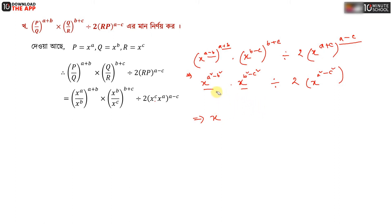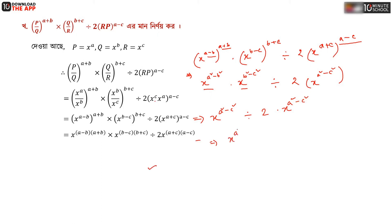Ultimately we have a squared minus c squared, and the result is 2 into x to the power a squared minus c squared, which equals 1.